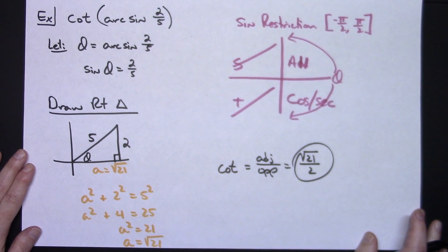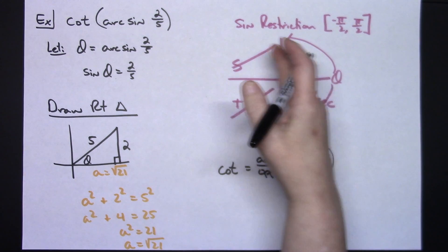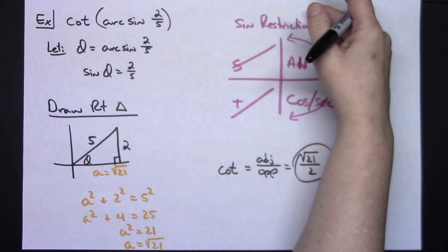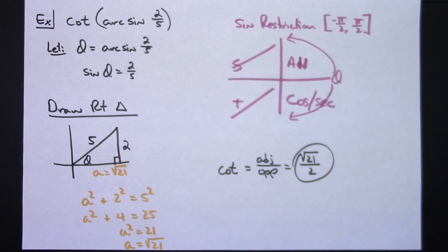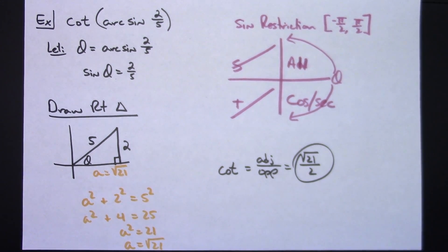Just a couple of examples refreshing your memory on where trig functions are positive in each quadrant, refreshing your memory on your restrictions, and showing how you can evaluate that type of expression without the use of a calculator. Thanks for watching — if the videos are helping don't forget to subscribe to the channel and share with your friends.